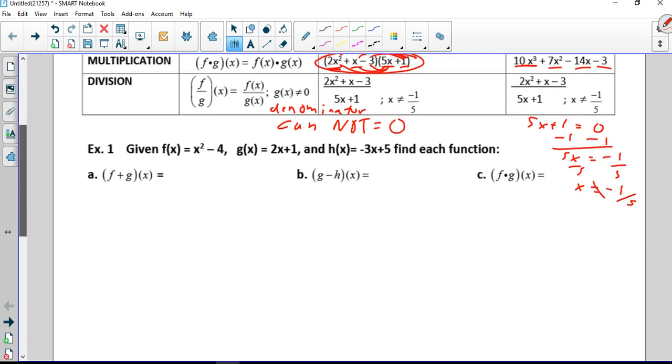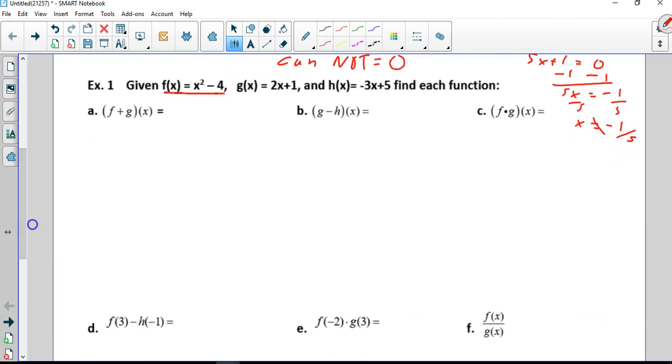So let's get into this. Here's our f of x, here's our g of x, and here's h of x. A quad and two lines. So f plus g just means taking x squared minus 4, you can put it in parentheses, you don't have to when you're adding. Plus g of x which is 2x plus 1.